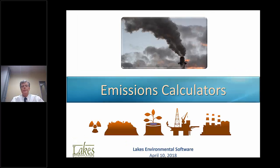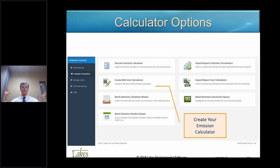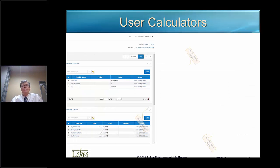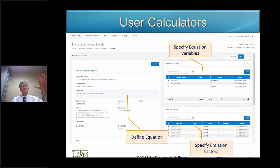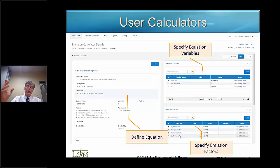For the emissions calculators, you can use predefined calculators or create your own. You can also run batch emissions: if you have a large set of calculations to do and you already have the data — throughput, for example — you press a button and we execute all of them for you. There are many types of calculation methods. If you have to create your own, it's very easy. Mr. Johnson will show this: you define your equation, specify the variables, emissions factors, and chemicals, then run it, and you have a new calculator just like that.